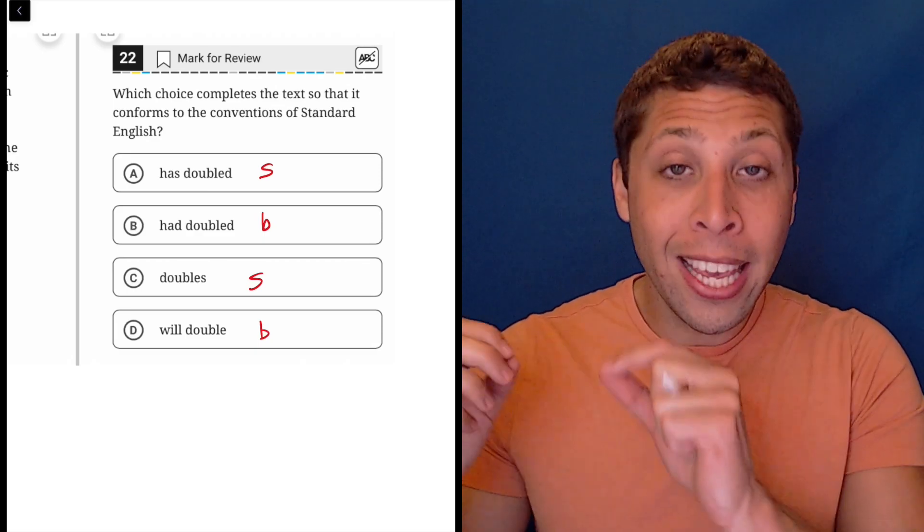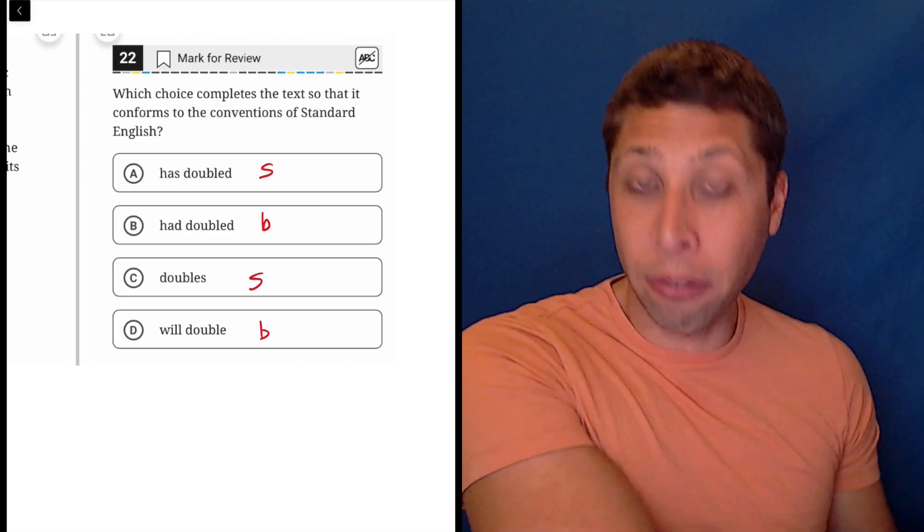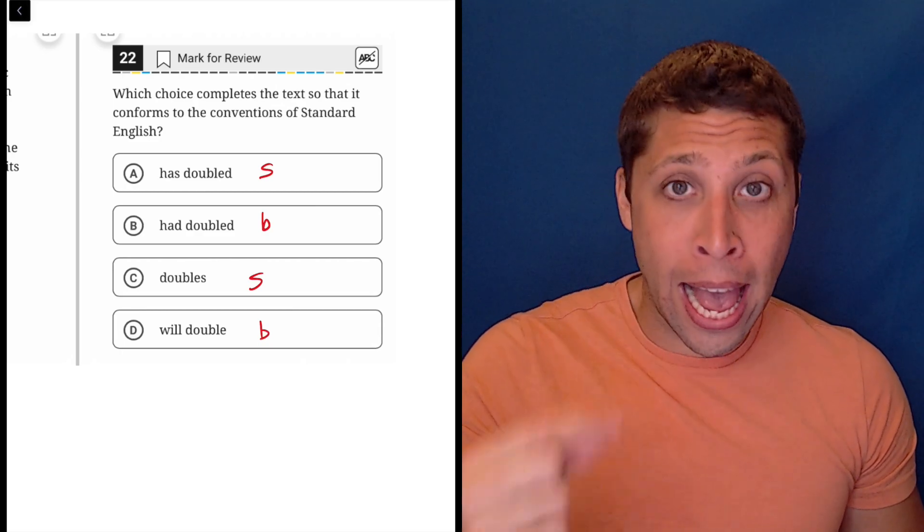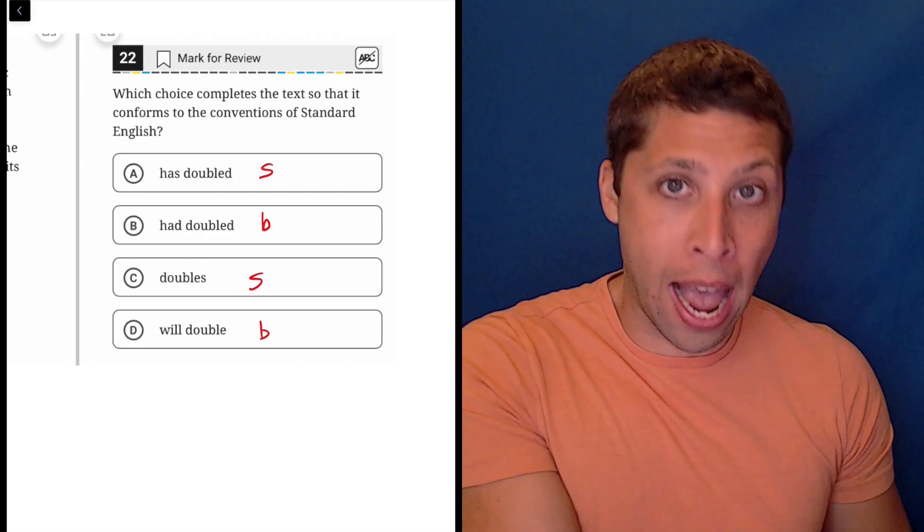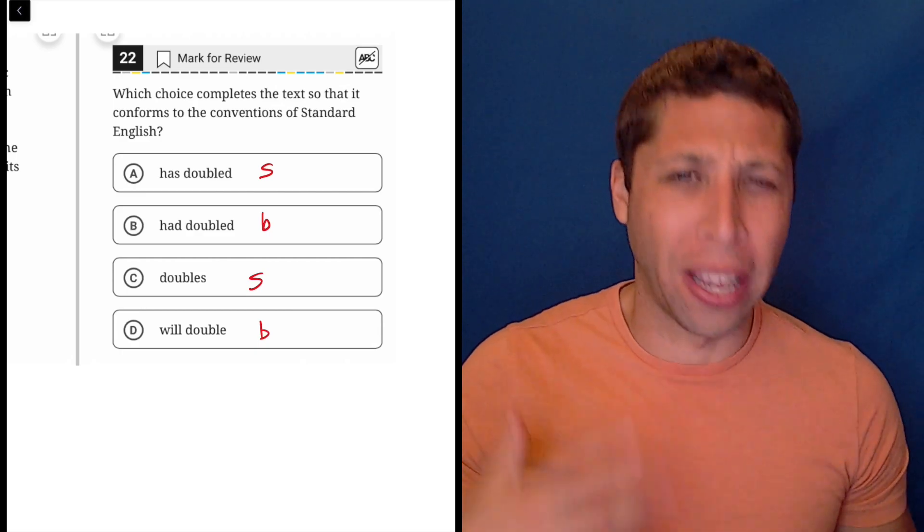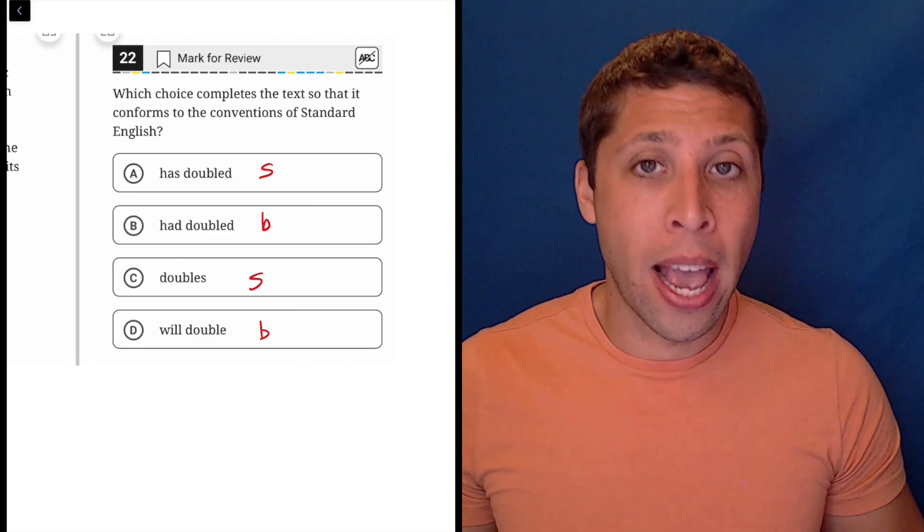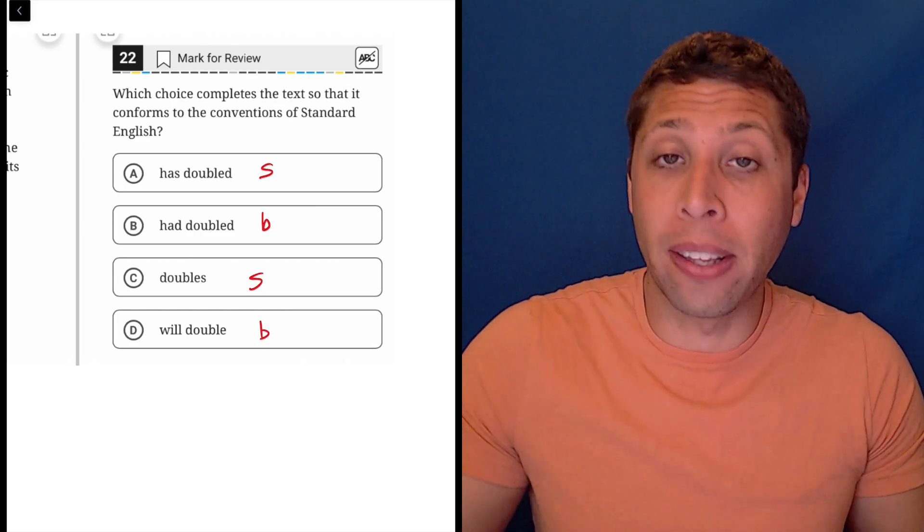We could say it had doubled every hour—it, singular thing. Or we could say they had doubled every hour. Now that's multiple things. They is plural. So notice the had doubled part doesn't change. And this is just a fact about this particular tense.